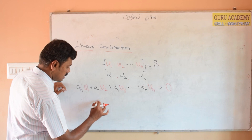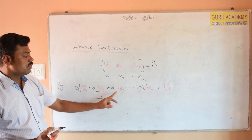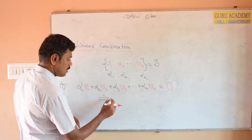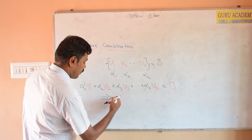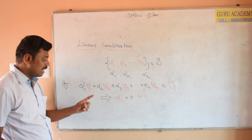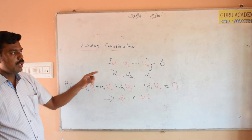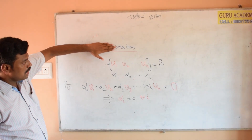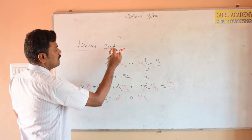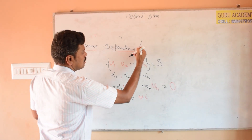If alpha 1 V1 plus alpha 2 V2 plus ... plus alpha N VN equals zero, and this implies that all alpha i equal zero for all i, then the set is linearly independent. On the other hand, if the combination equals zero but not all scalars are zero, then one is dependent and another is independent — this is the linearly dependent case.